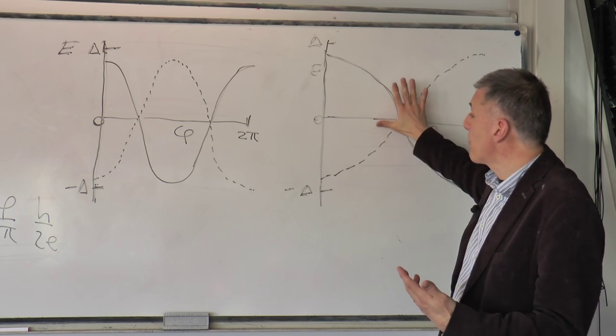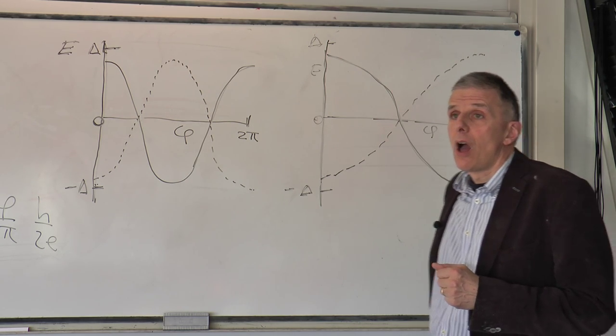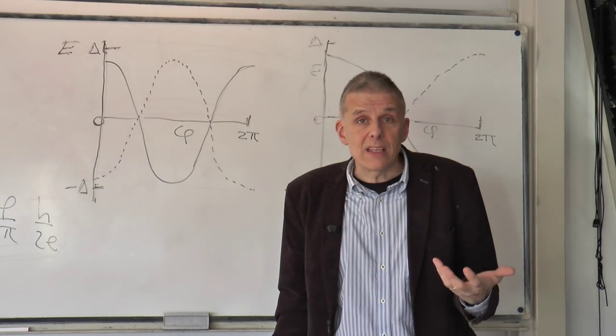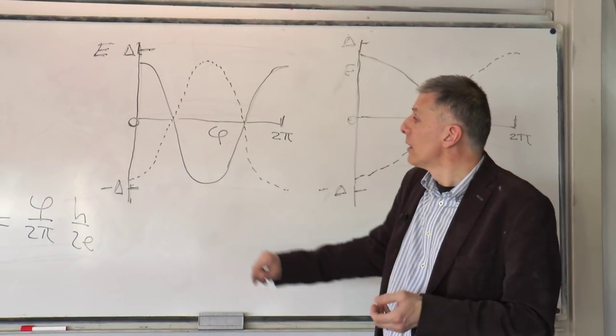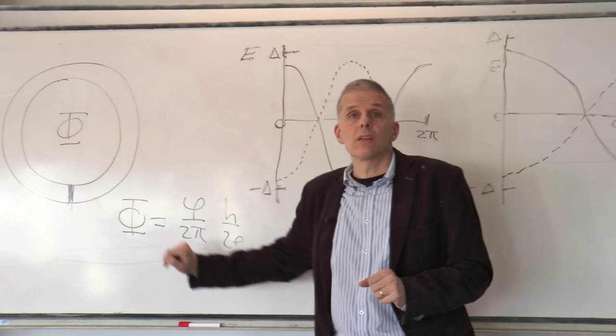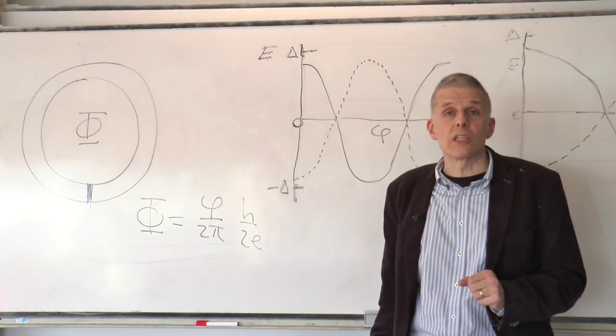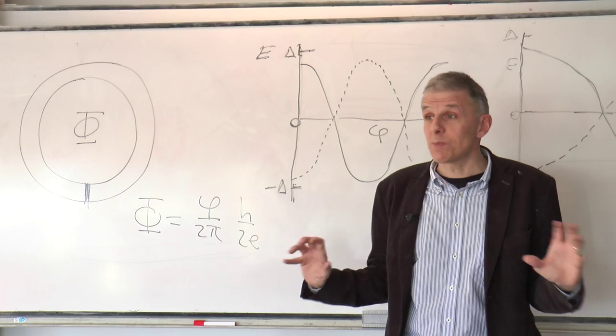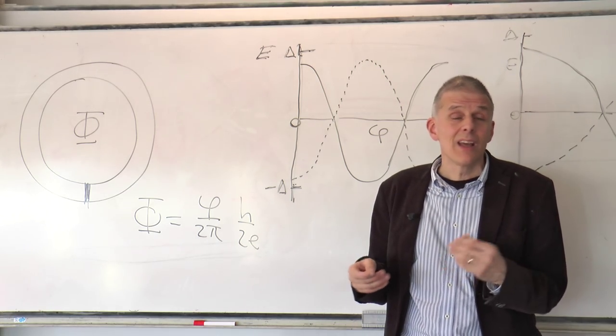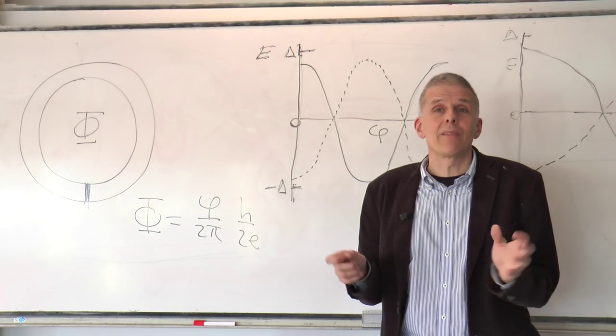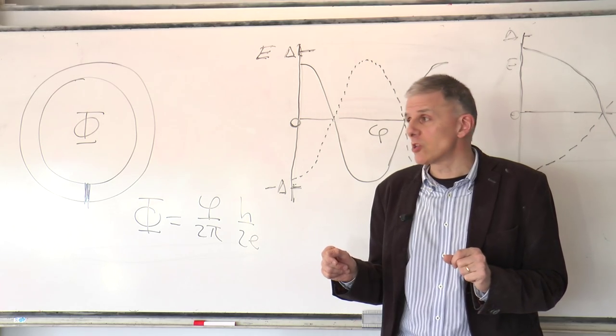And so the periodicity of the properties of this Josephson junction are periodic in phase in units of four pi, or in the flux, the corresponding flux periodicity would be h over e. That is very strange, because this is superconductivity, and the single charge should not appear. Everything should be in units of the Cooper pair charge, two e.